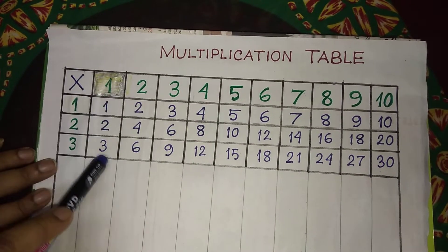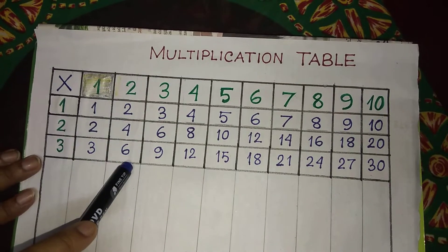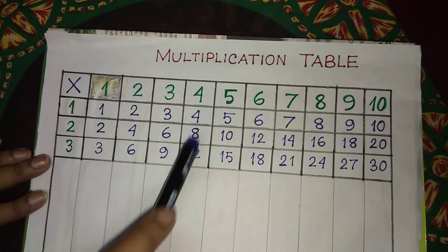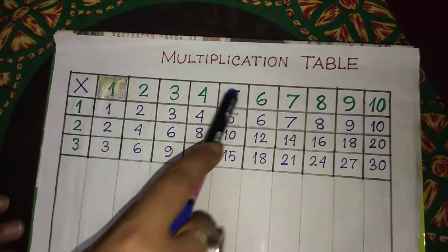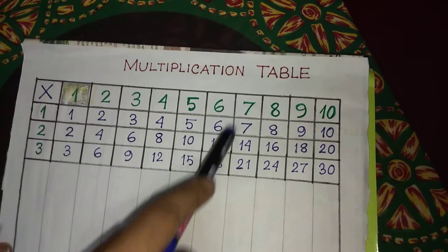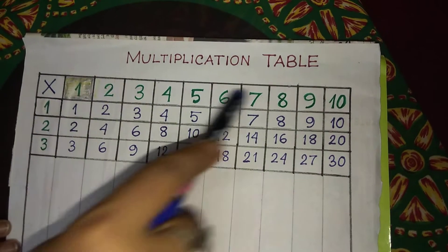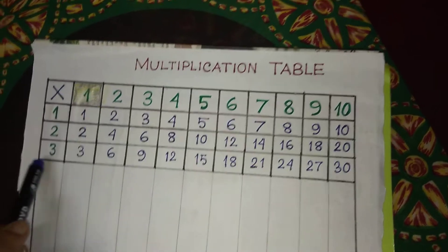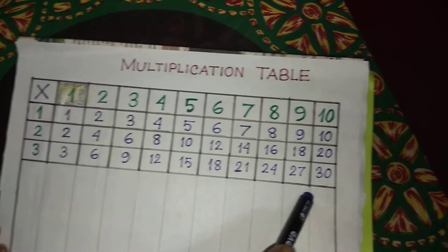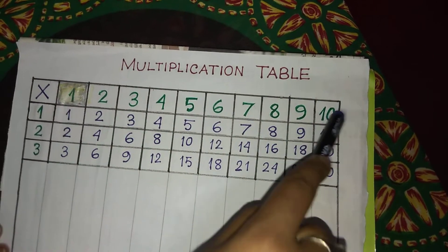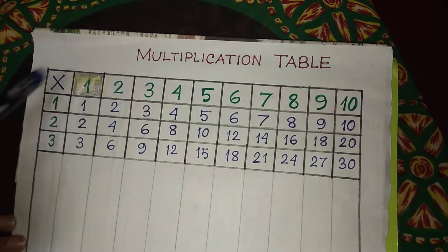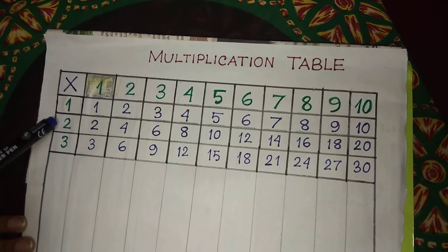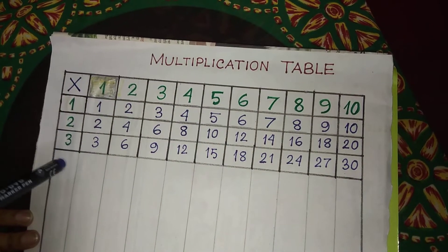Three ones are three. Three twos are six. Three threes are nine. Three fours are twelve. Three fives are fifteen. Three sixes are eighteen. Three sevens are twenty-one. Three eights are twenty-four. Three nines are twenty-seven. Three tens are thirty. So we have learned table of one, table of two, and now we read table of three.